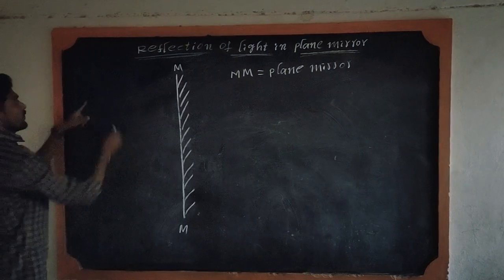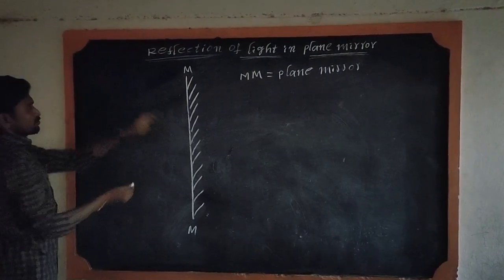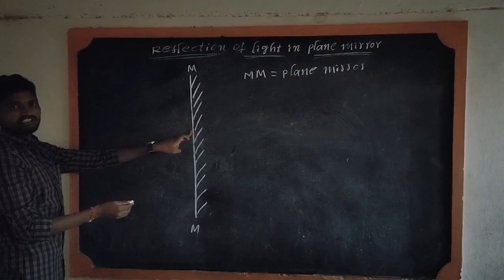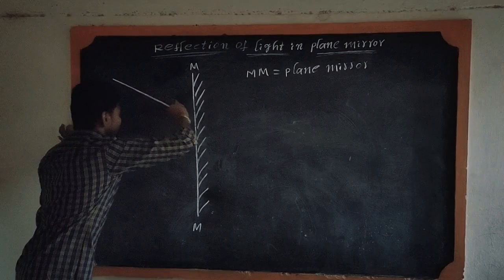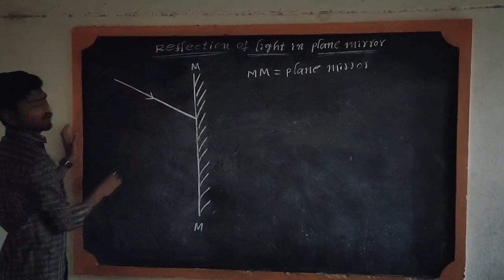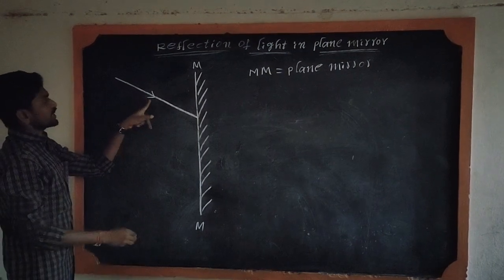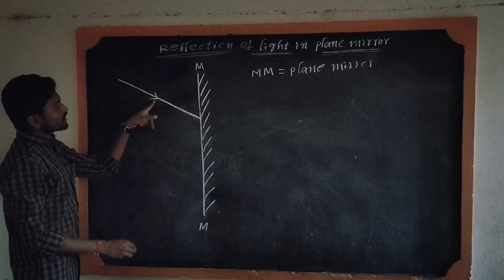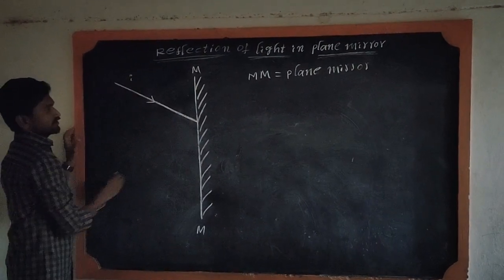So next, when the light ray travels and moves towards the mirror, it is called an incident ray. This is the incident ray. The arrow mark indicates that the light ray moves towards the mirror — this is the incident ray.